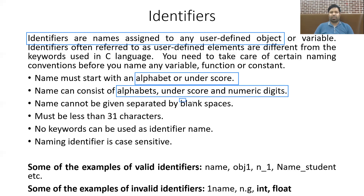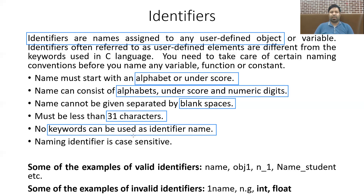The name cannot include blank spaces. Depending upon the compiler, the size of the identifier is fixed — in most cases it is fixed to 31. There are also certain predefined names used as keywords in the program that have a fixed meaning, so keywords cannot be used to name an identifier. Finally, naming an identifier is case sensitive — if you name a variable with capital ABC, you cannot access it with small abc, and in fact you could create two separate variables with those different cases.